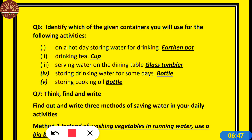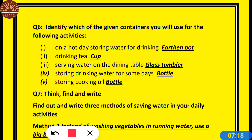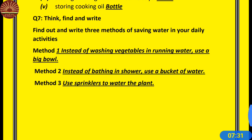Which of the given containers will you use for the following activities? On a hot day, storing water for drinking — we use an earthen pot. Mitti ka ghada — in earthen pot, summer mein paani thanda ho jata hai. For drinking tea we need a cup. For serving water on the dining table we need a glass tumbler. For storing water for some days we need bottles.